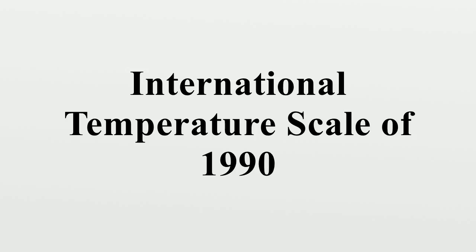ITS-90 also draws a distinction between freezing and melting points. The distinction depends on whether heat is going into or out of the sample when the measurement is made. Only gallium is measured while melting; all other metals are measured while the samples are freezing. A practical effect of ITS-90 is that triple points and the freezing and melting points of its 13 chemical elements are precisely known. Only the triple point of Vienna Standard Mean Ocean Water is known with absolute precision, regardless of the calibration standard employed, because the very definitions of both the Kelvin and Celsius scales are fixed by international agreement based, in part, on this point.